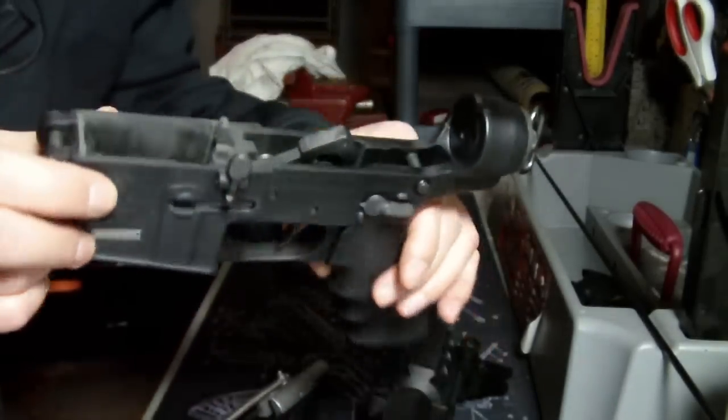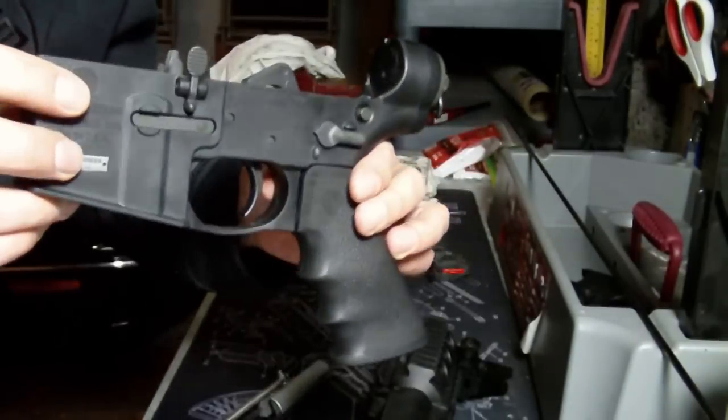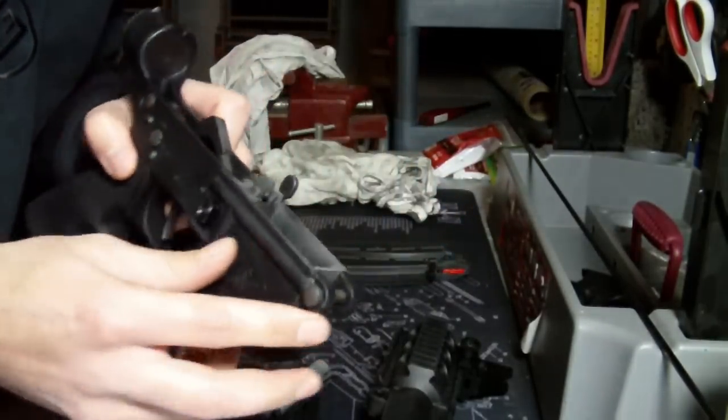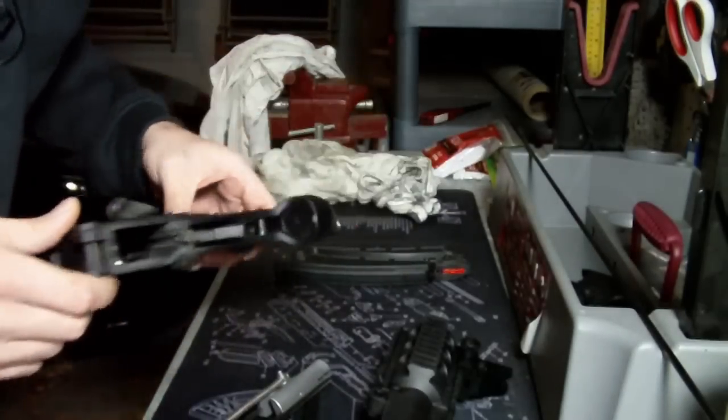The lower receiver really doesn't break down any further than that. Obviously, you can take your pistol grip off, but other than that, I just kind of leave it as is and clean with my brush from that point.